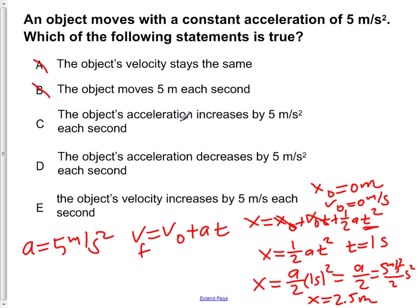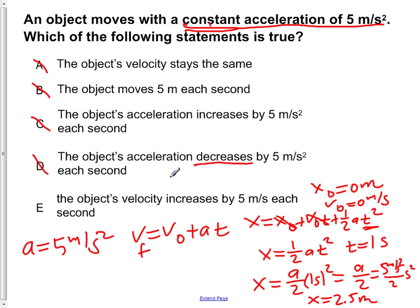Answer C says the object's acceleration increases by 5 meters per second squared each second. But in the initial problem, we're told that we have a constant acceleration of 5 meters per second squared, so our acceleration is not going to increase. Likewise, D is also wrong because it says our acceleration is decreasing, but once again we're told initially that we have a constant acceleration. So D is wrong.